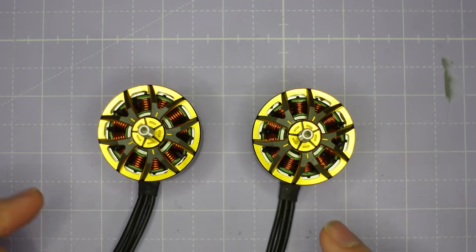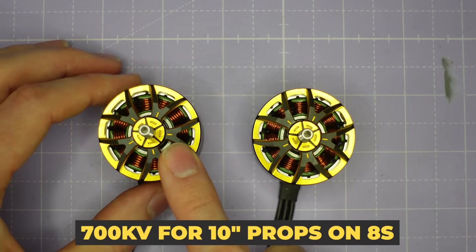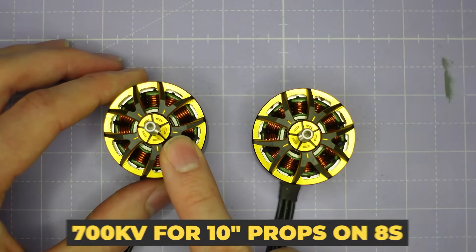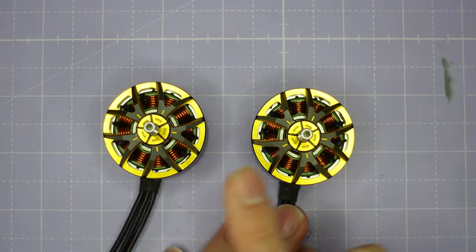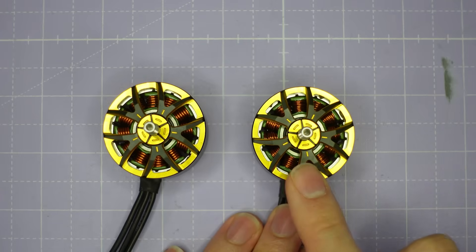In terms of KV we have two different KVs, a 700 KV variant for 10 inch cine lifters on 8S and a 925 KV variant for 10 inch cine lifters on 6S and the only difference between these two motors is the KV of the windings.